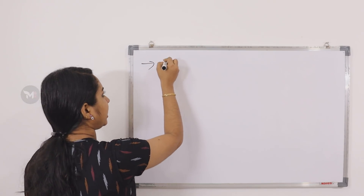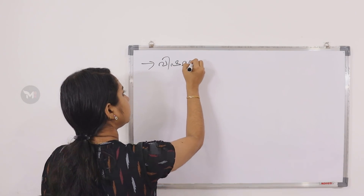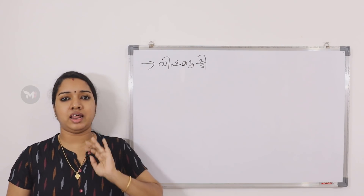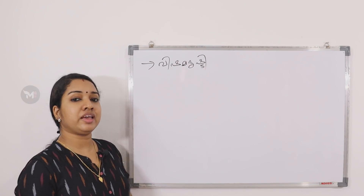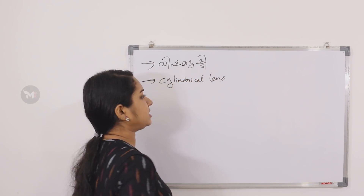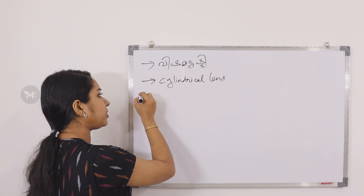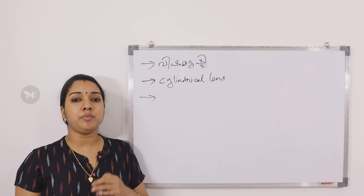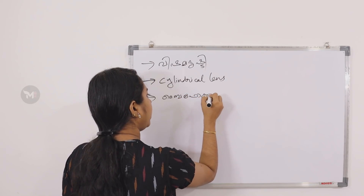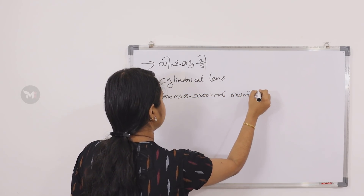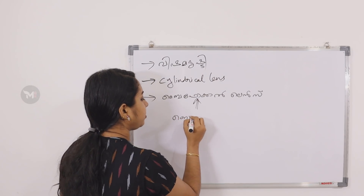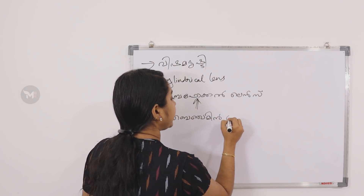Astigmatism is a condition of the cornea at a different angle. It is corrected using a cylindrical lens. The bifocal lens was invented by Benjamin Franklin.